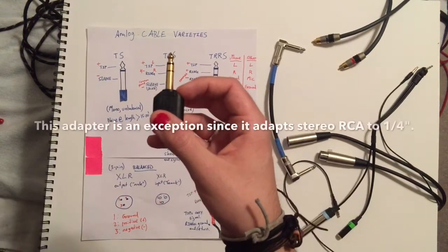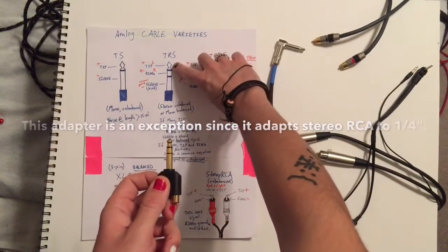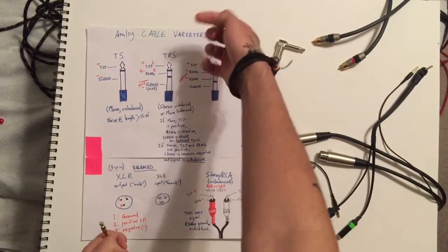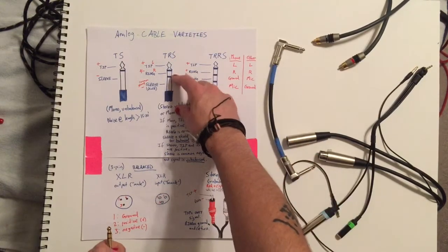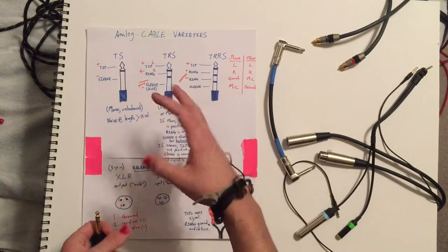It can send a balanced signal in mono in which case the tip functions as the positive and the ring functions as a negative. So that's the receiving and then the sleeve functions as a shield to ground this circuit and give it some protection against noise.